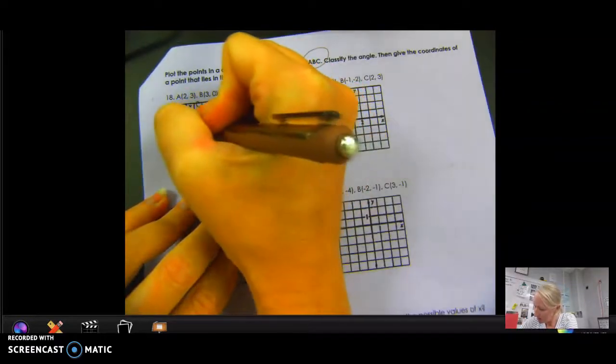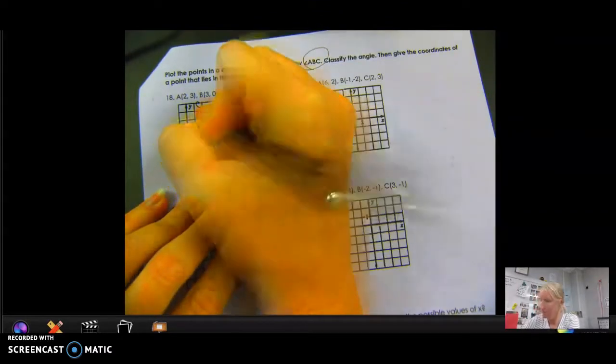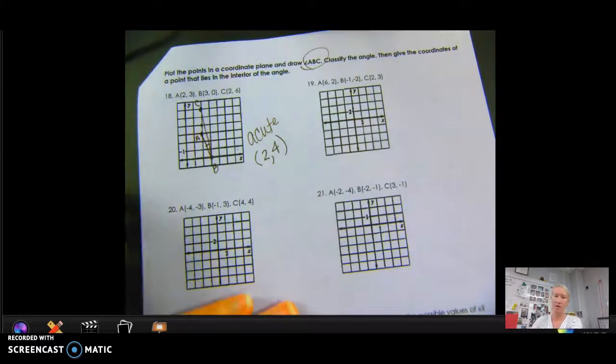So that would be an acute angle. Finding a point that lies inside of it may be hard, but it looks like this one does. That is over 1, 2, up 1, 2, 3, 4. 2, 4. All right. Next one.